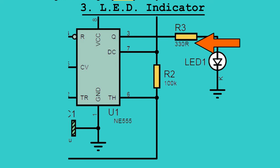Step 3: LED Indicator. Connect a 330 ohm resistor in series with the anode of the LED to pin 3 (output). Connect the cathode of the LED to pin 1 (ground).